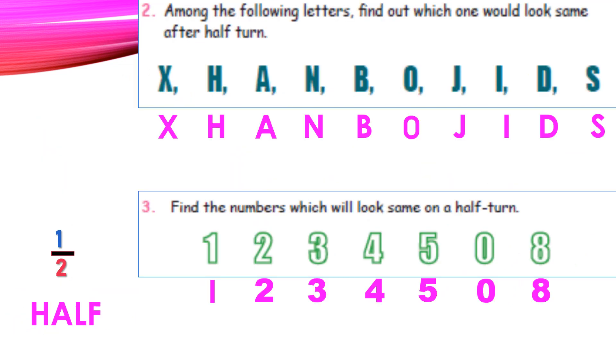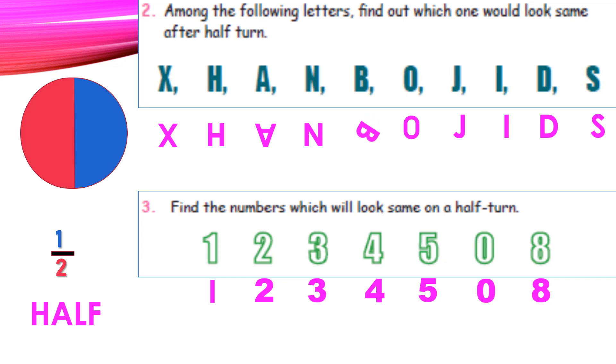Second question. Among the following letters, find out which one would look same after half turn. So half turn. Let us see that first. X turn around. H. A. N. B. O. J. I. D. E. Then finally, S.